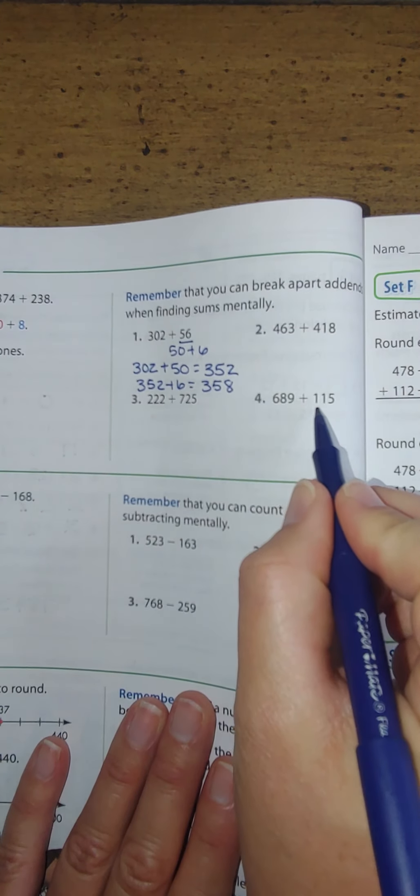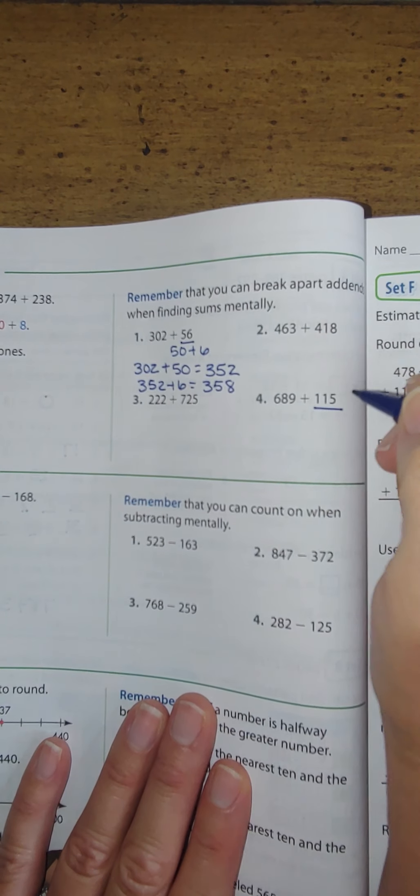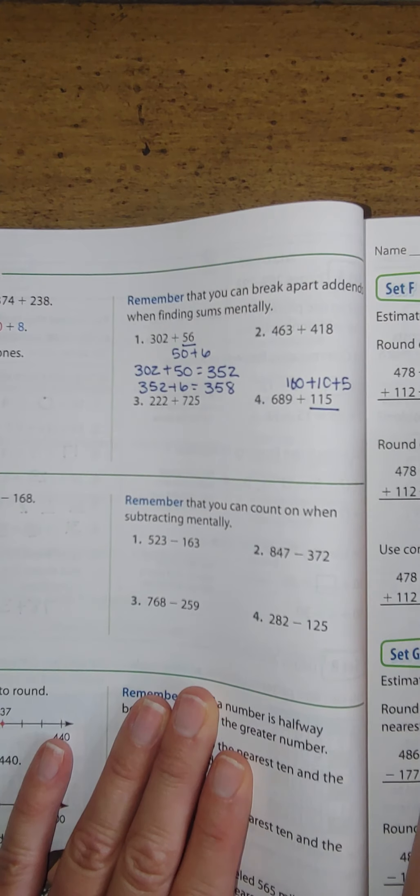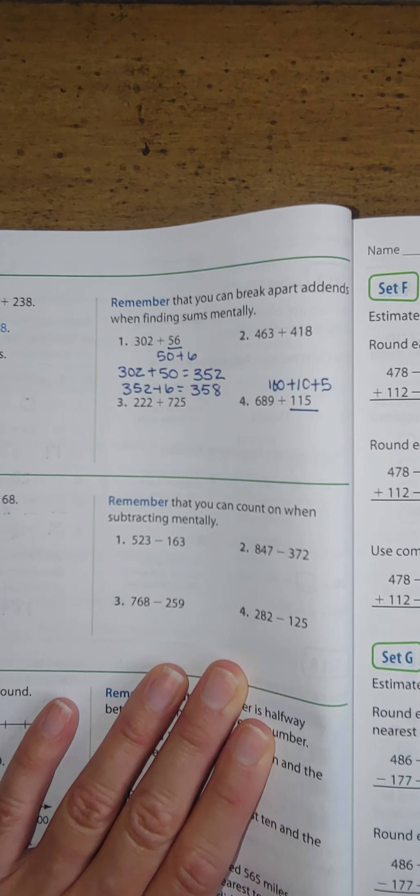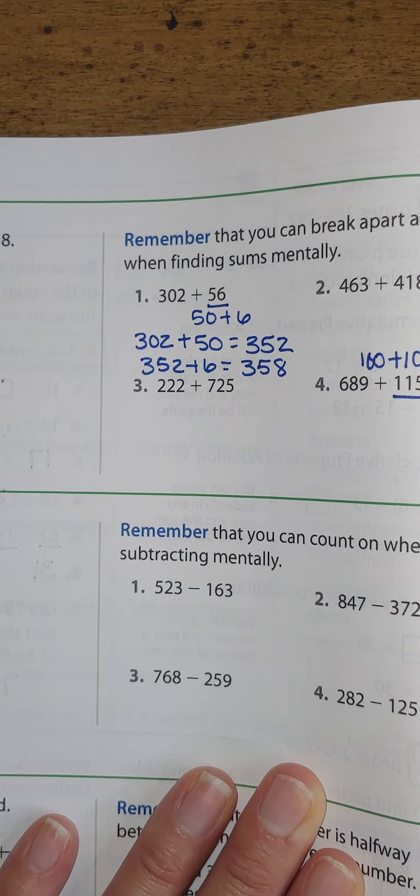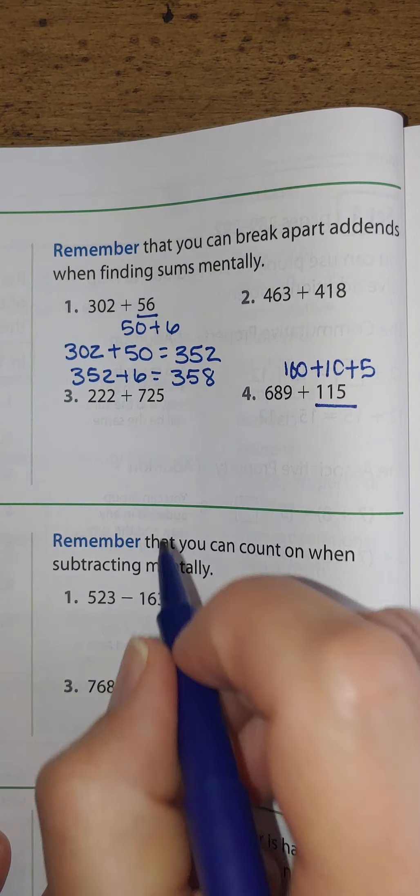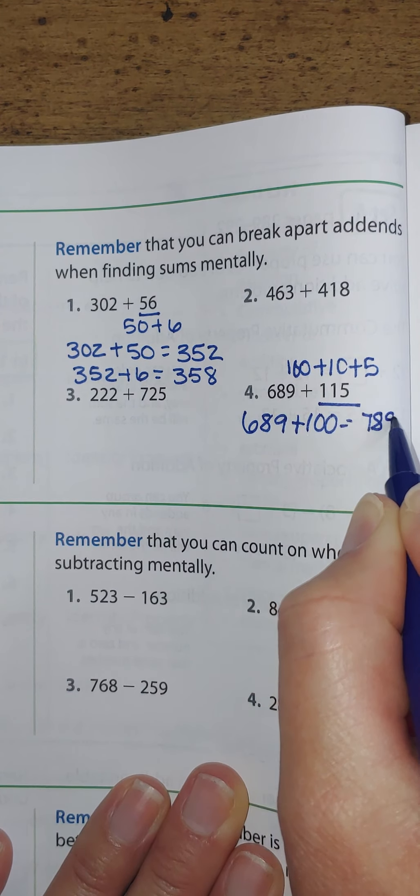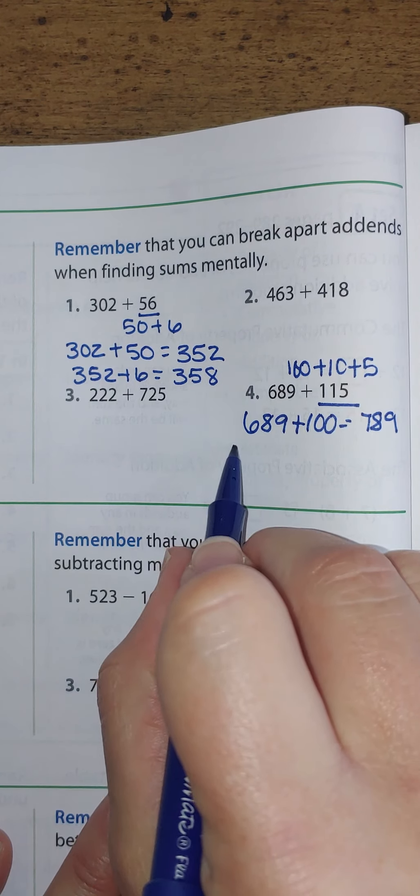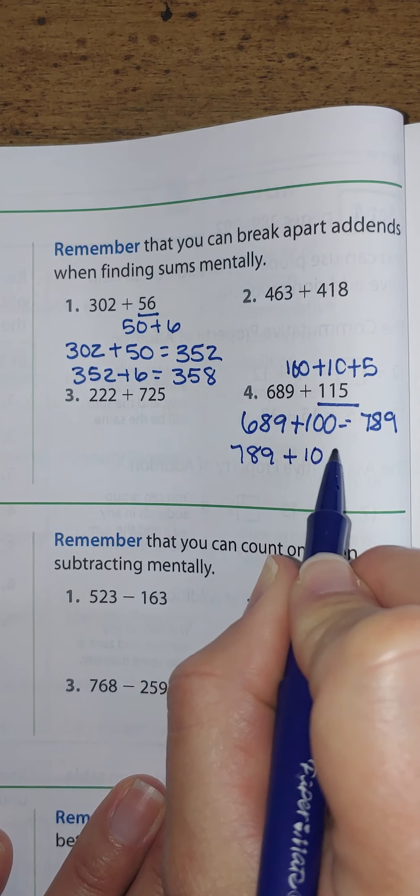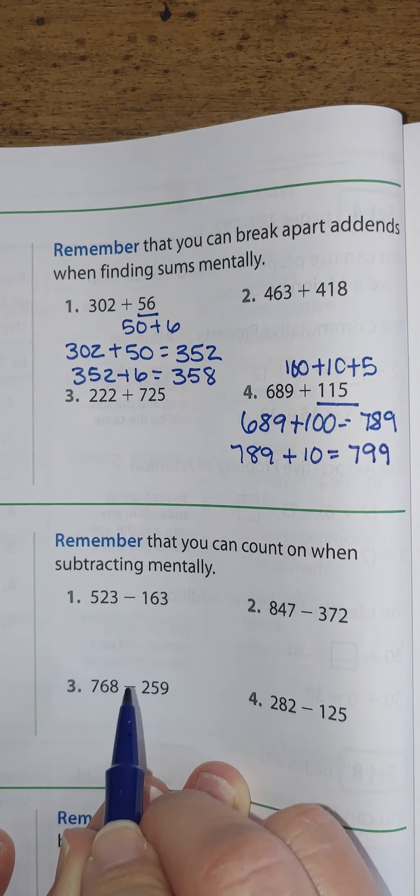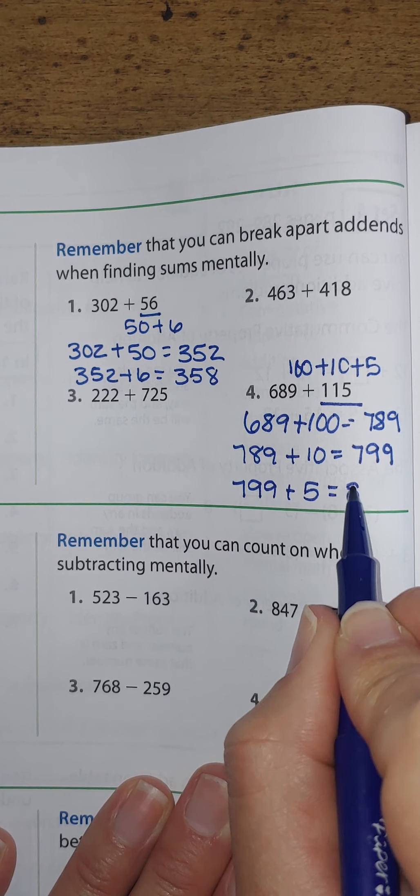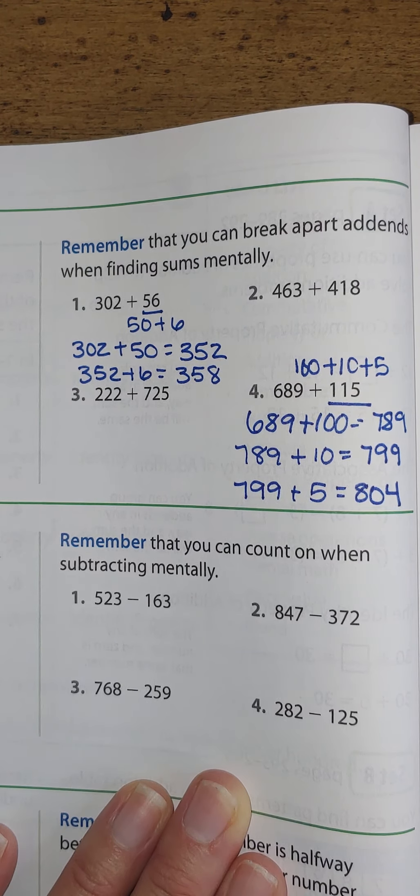Let's do number 4 and do the same thing. So let's break up 115 into 100 plus 10 plus 5. And now we're ready to add up our numbers. That means I would take 689 and add my 100 first, which would give me 789. Then I'm going to take 789 and add the 10, so 799. And then 799 plus 5, I would have to move into the 100s and get to 804.